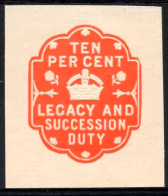Finland: Perintövero (Finnish) or Arvsskatt (Swedish)—inheritance tax, a state tax. Inheritance to the close family is tax-free up to the worth of €20,000, and increases from there via several steps—for instance, being 13% for €60,000 to €200,000—to the maximum of 19% that must be paid for the portion of the inheritance that exceeds €1,000,000. Taxation is more severe in the case of remote relatives or those with no family connection at all.